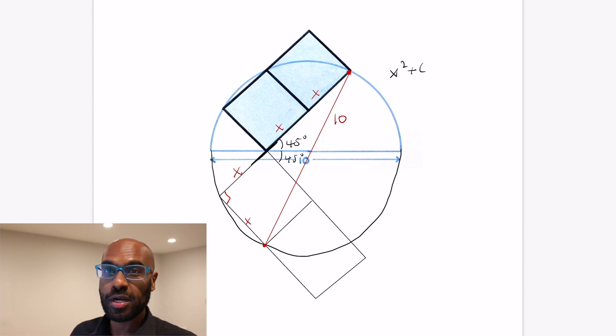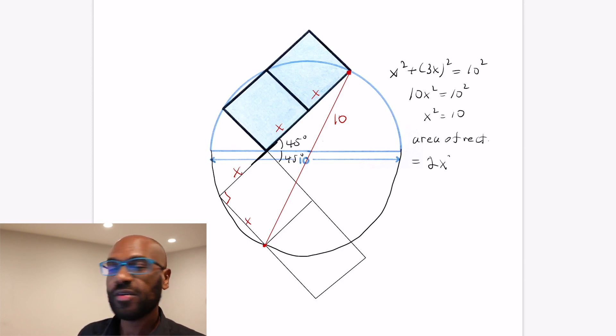And now we have this right angle triangle with hypotenuse 10 that has side lengths all involving the variable x. So we get x squared plus the quantity 3x all squared has to equal 10 squared, which then tells us that 10 times x squared is 10 squared itself. And so x squared is 10. And then again, the area of the rectangle then is two copies of this x squared. And so we get a total of 20.